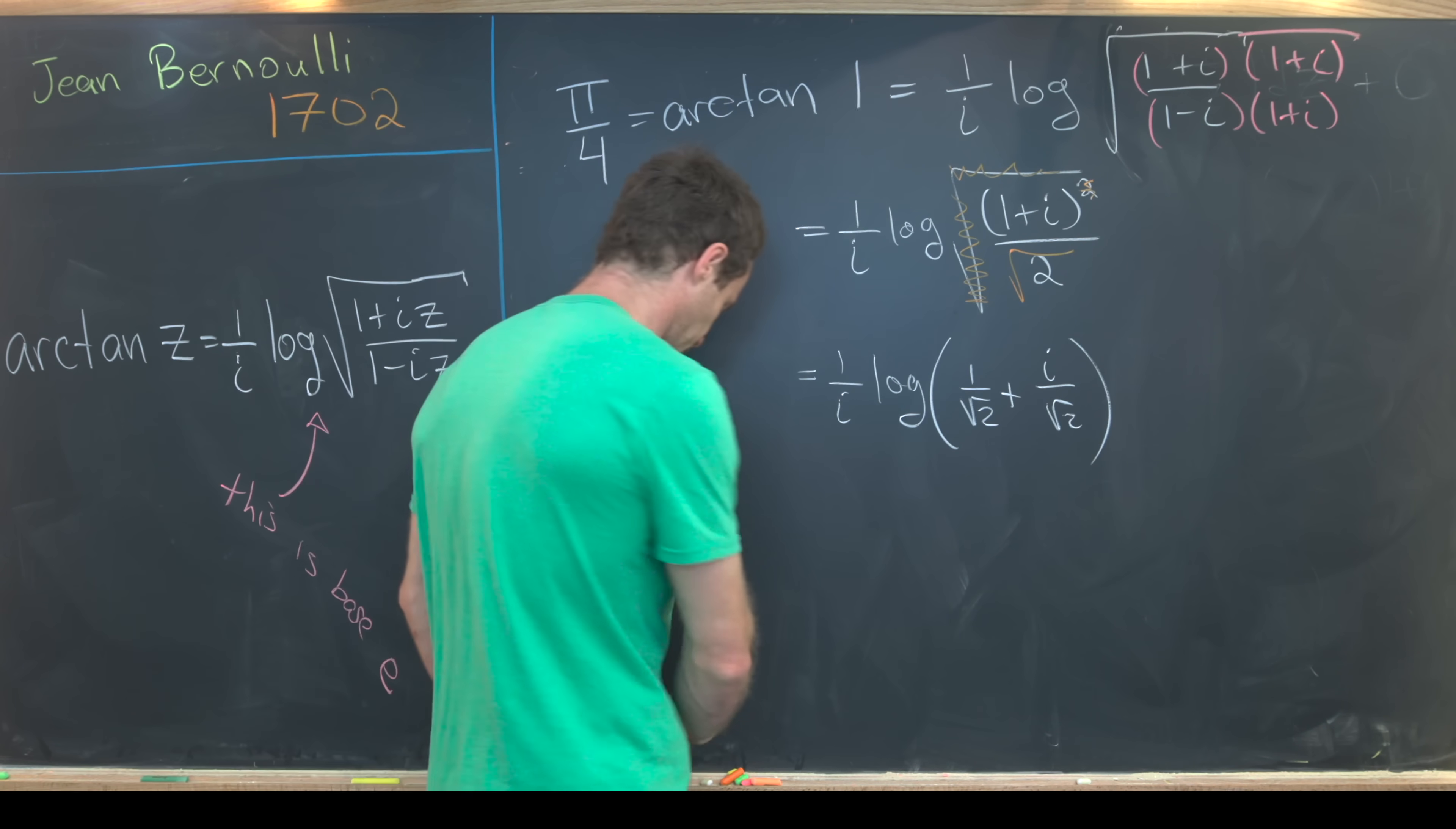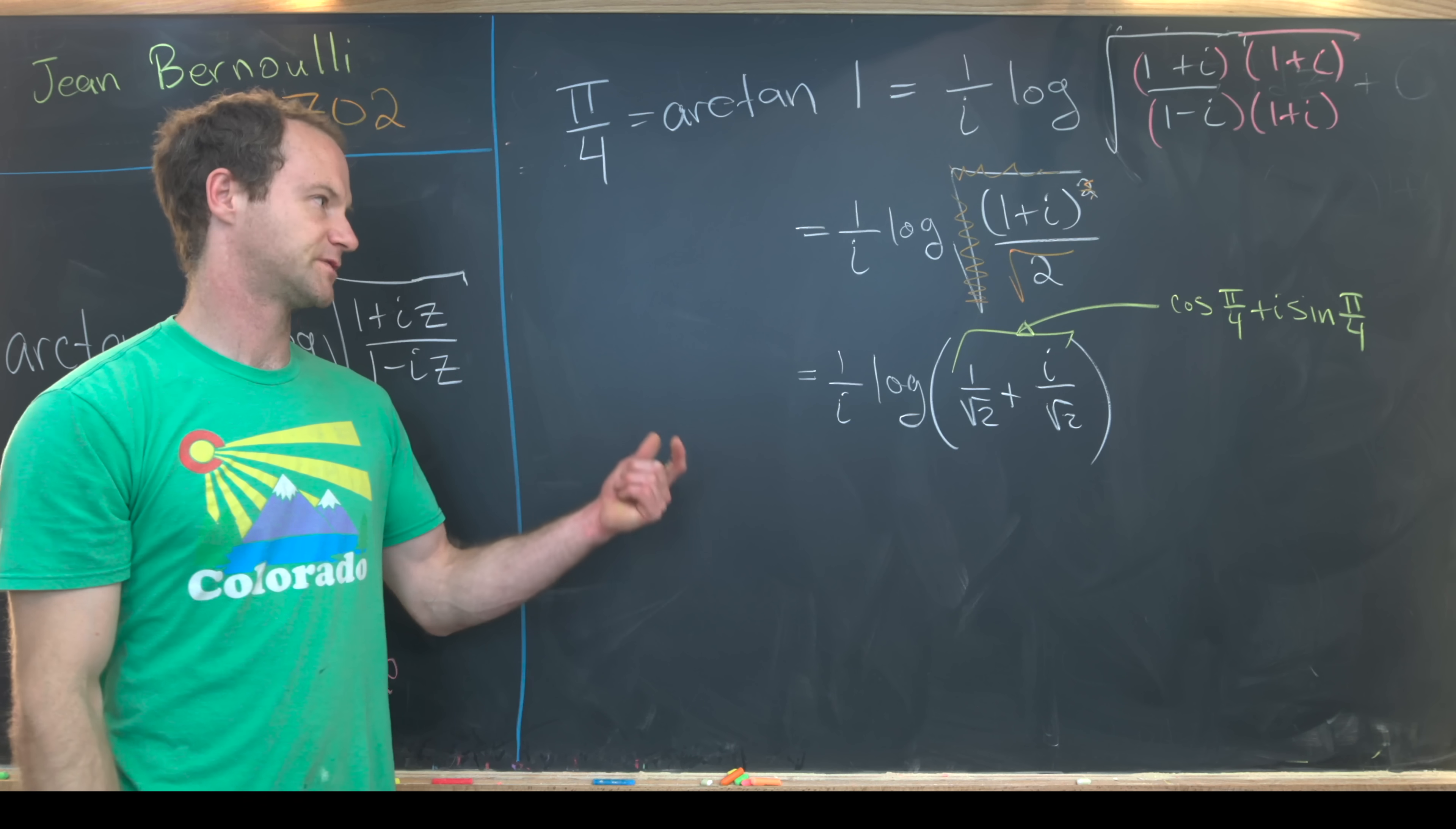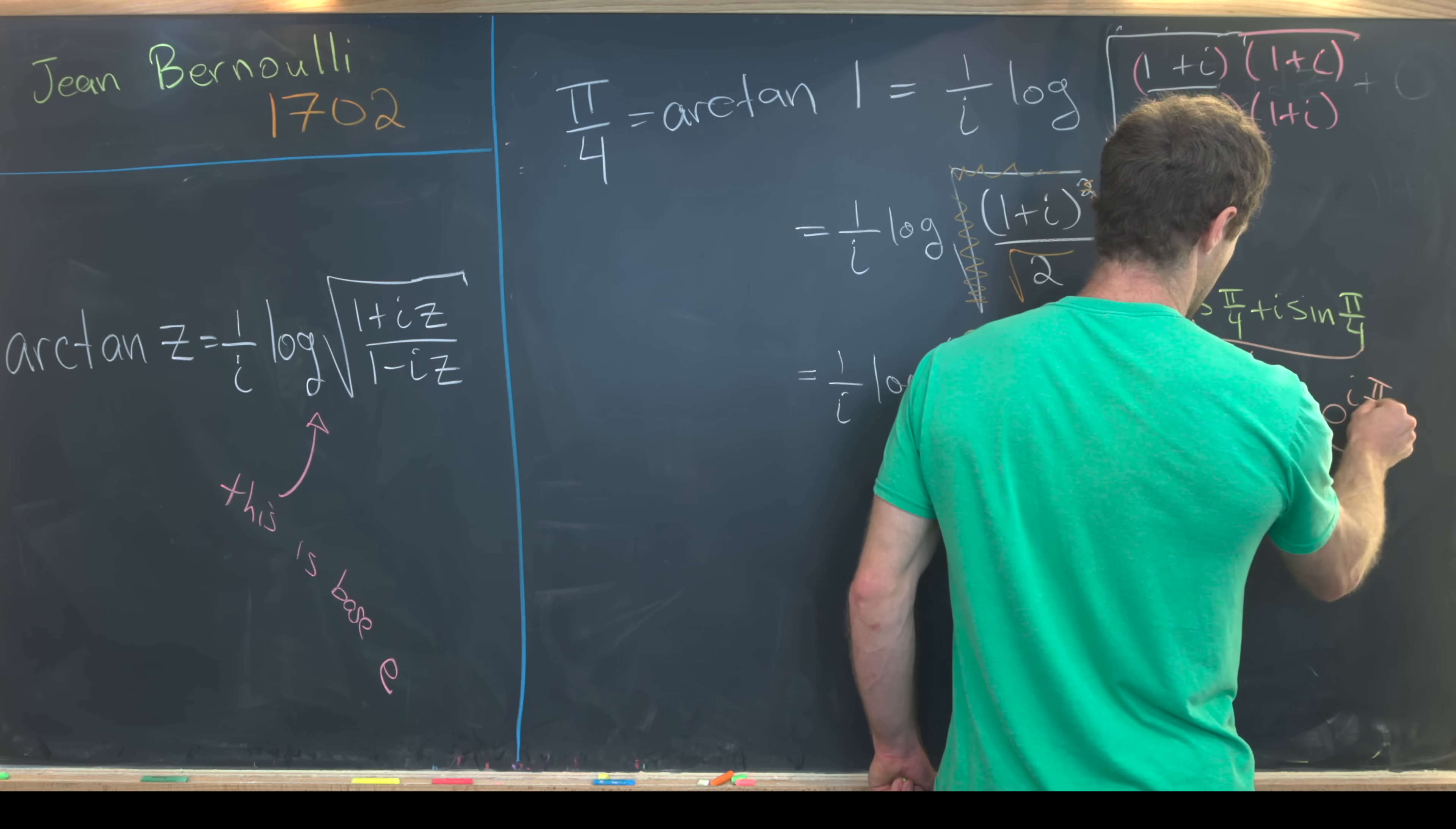Let's recall that one over root two is the same thing as cosine of π/4 and sine of π/4. So this is, in fact, cosine π/4 plus i sine π/4. That's well known because cosine and sine are both square root of two over two or one over square root of two at π/4. But now we can use Euler's formula to put these together into a complex exponential. This is e to the iπ/4.